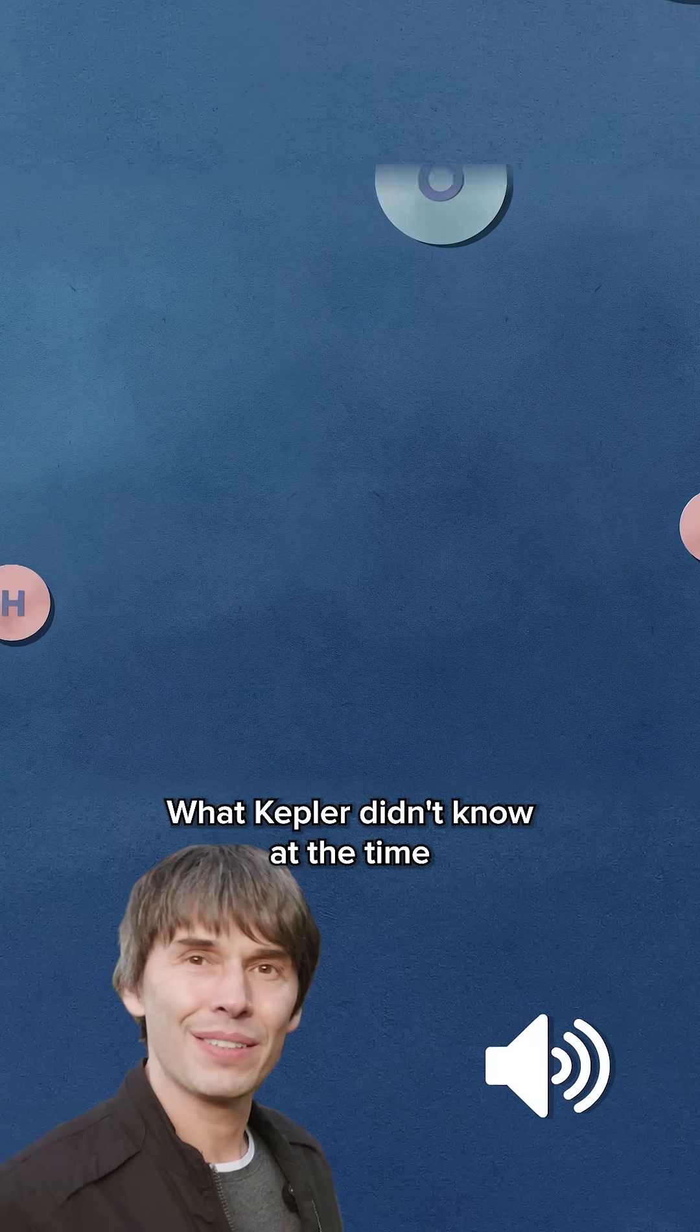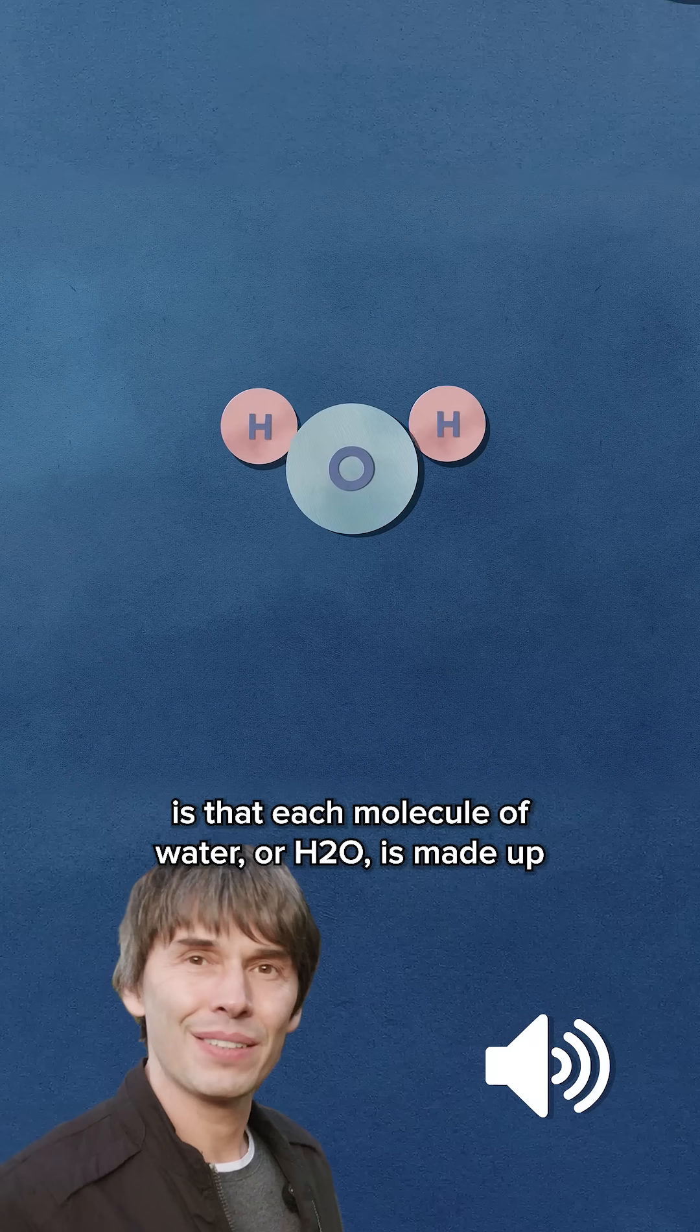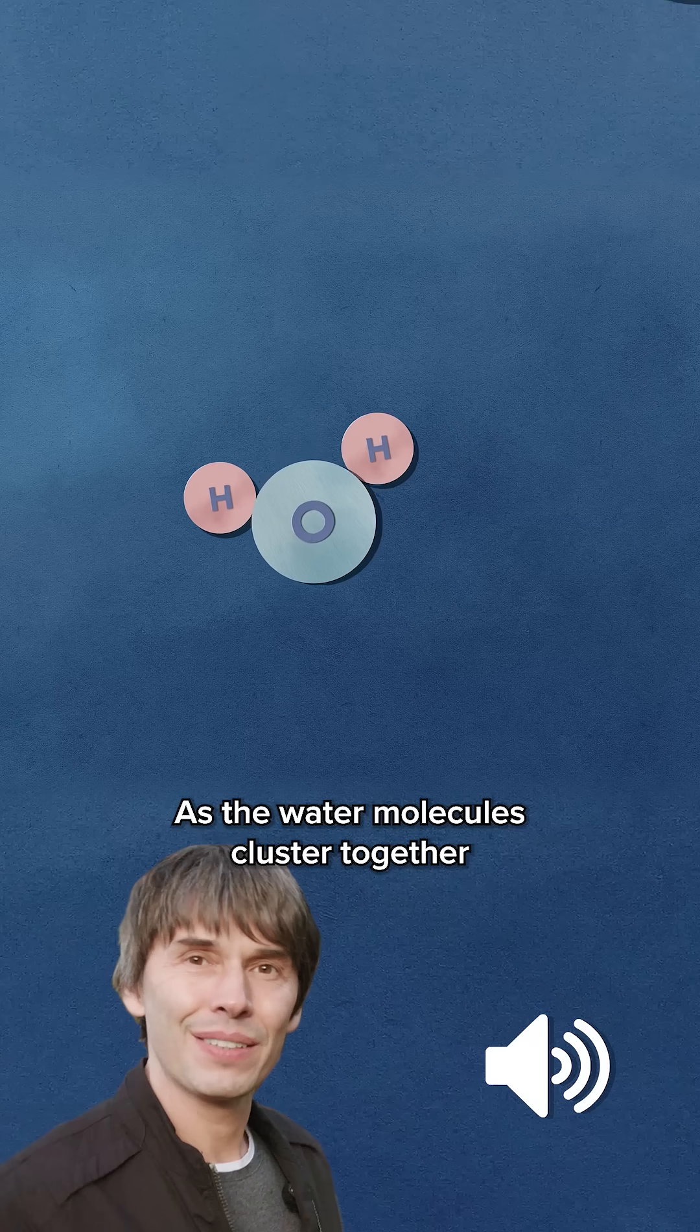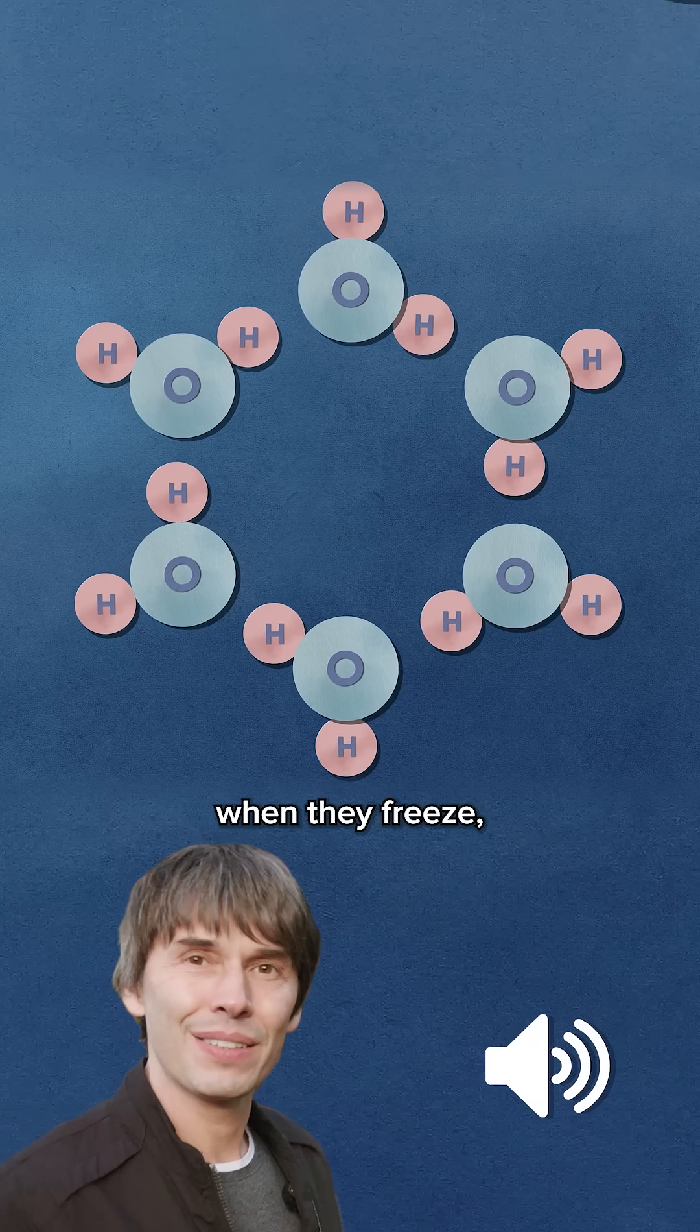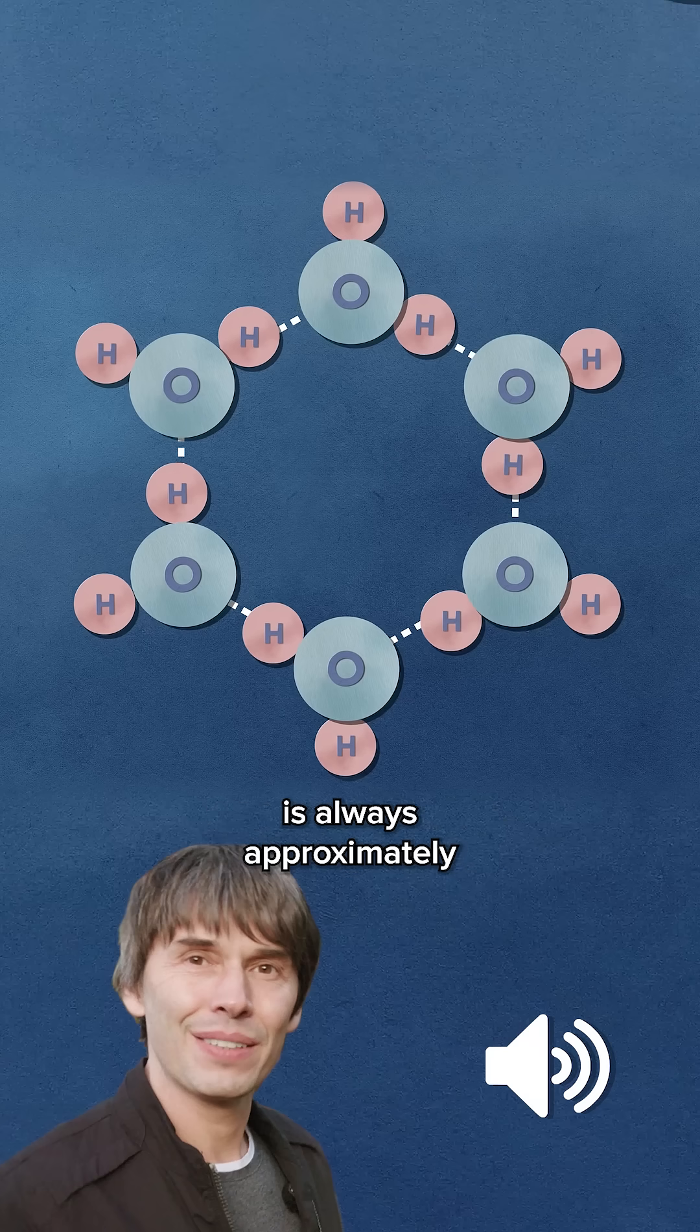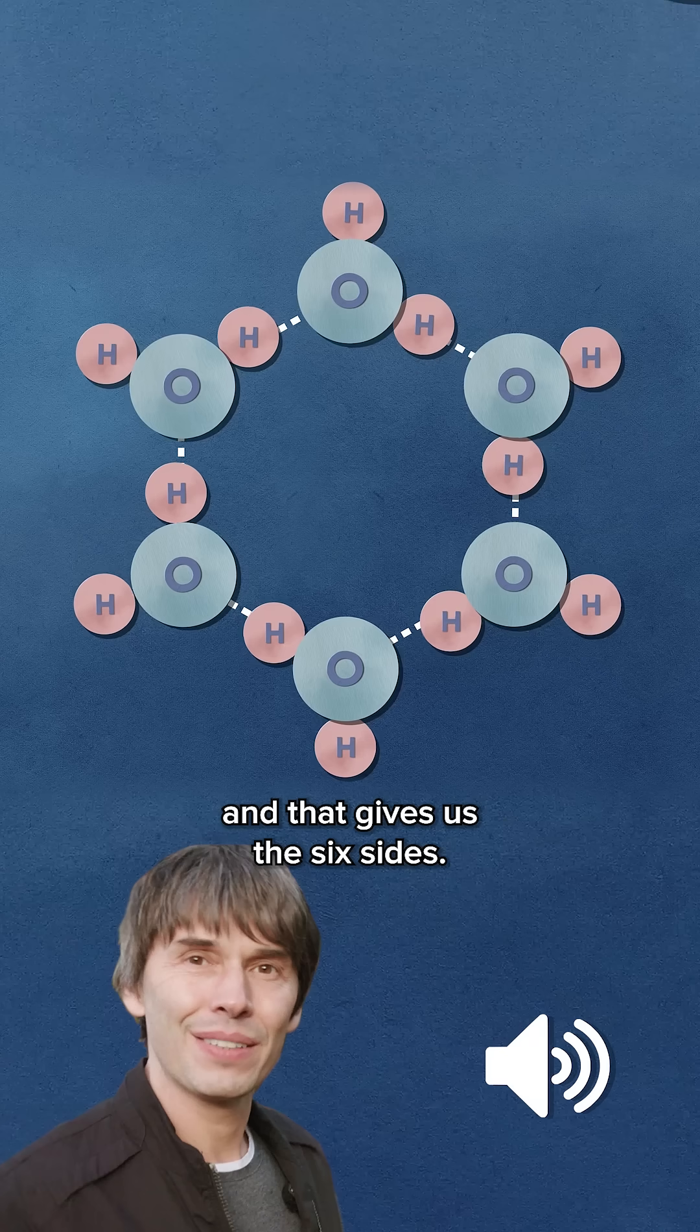What Kepler didn't know at the time is that each molecule of water, or H2O, is made up of two hydrogen atoms and one oxygen atom. As the water molecules cluster together when they freeze, the angle between the hydrogen atoms is always approximately 105 degrees. And that gives us the six sides.